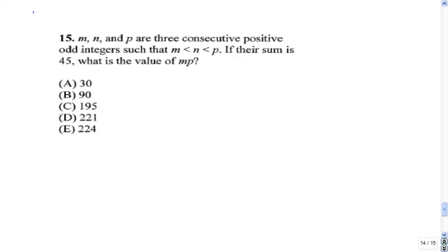15. M, N and P are three consecutive positive odd integers, such that M is less than N, less than P. If their sum is 45, what is the value of MP? The product of M and P.